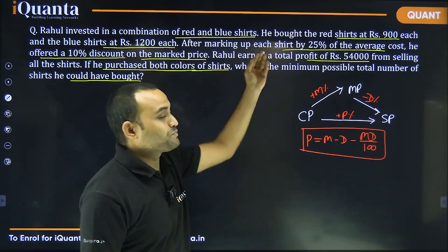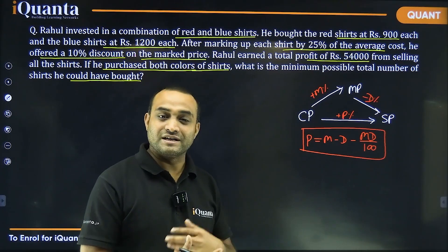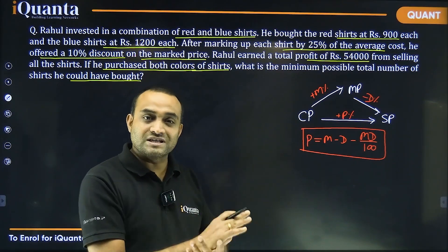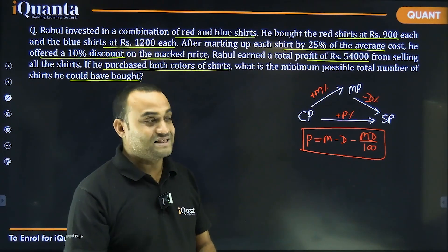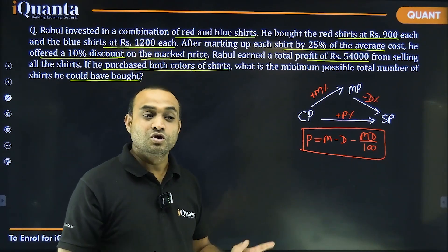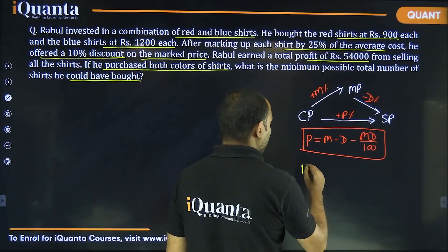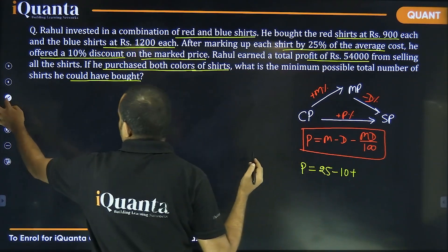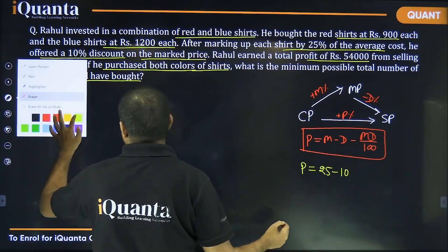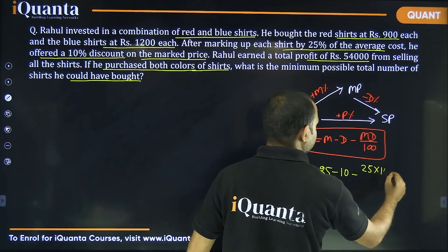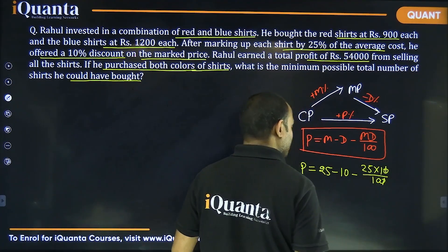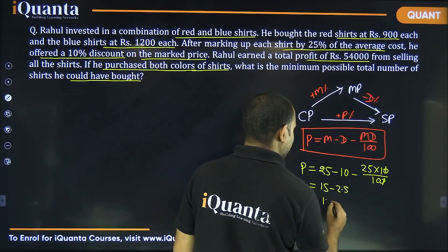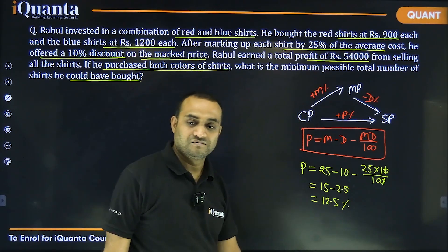The markup percentage on each shirt is 25% of the average cost, so overall the markup is 25% and the discount is 10%. Using the successive formula, profit percentage = 25 − 10 − (25 × 10)/100 = 25 − 10 − 2.5, which equals 12.5%.